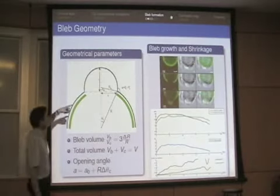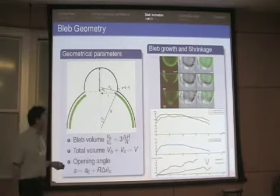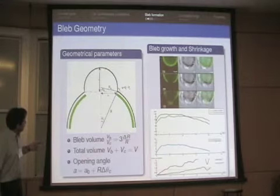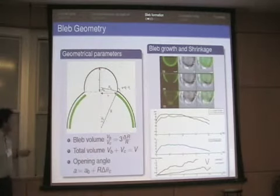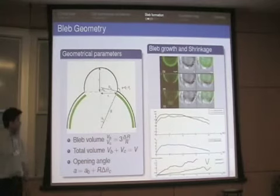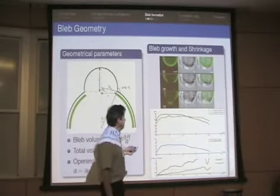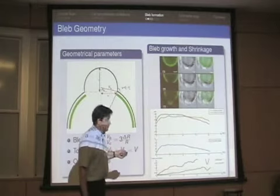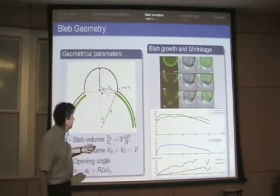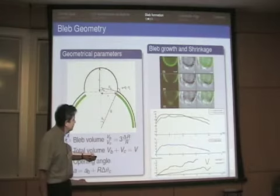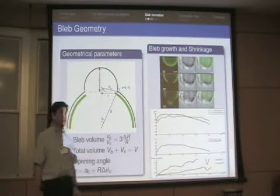Looking at the dynamics: there are a few parameters — the height of the bleb and the radius at the base (expressed as the angle from the cell center, roughly a/R). The bleb forms, reaches a more-or-less steady state, then decays. After about 5 seconds the bleb reaches steady state, persists for 10 to 15 seconds in this case, and then decays away.